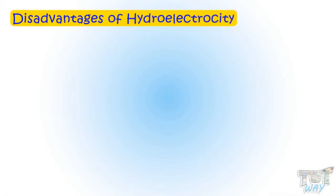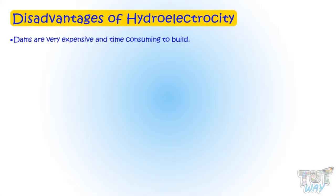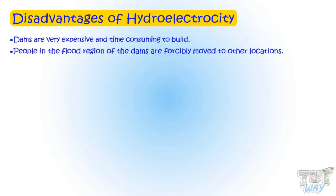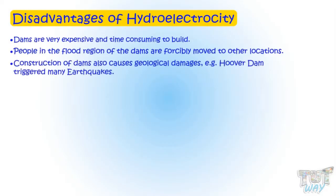Let's learn some of the disadvantages of hydropower. Firstly, dams are very expensive and time-consuming to build. People in the flood regions of the dams are forcibly moved to other locations. Construction of dams also causes geological damages — for example, the construction of Hoover Dam triggered many earthquakes.